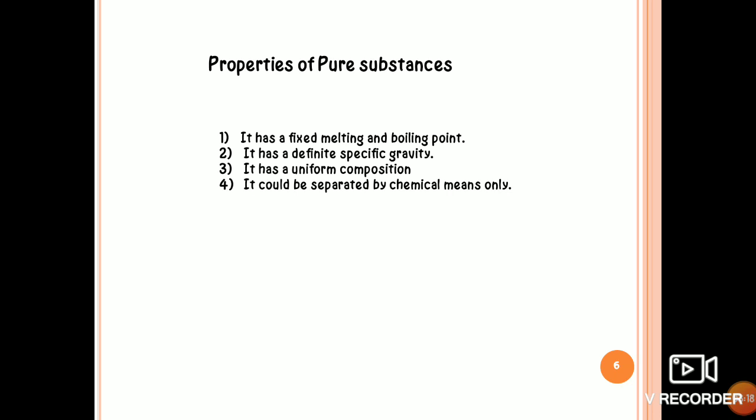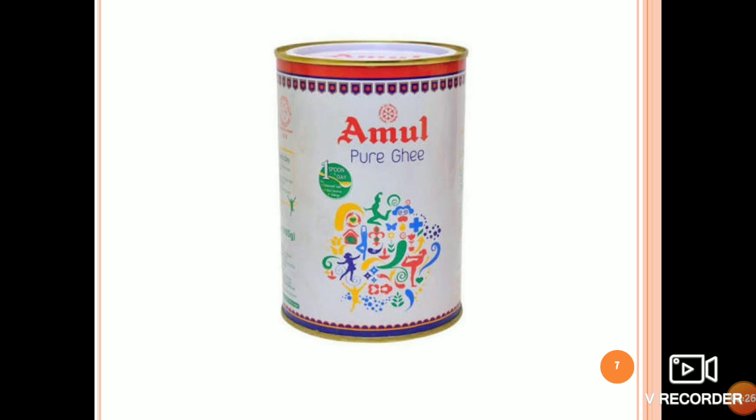If you see pure written on a container of a chemical, does this mean that it is made up of only one kind of particles? No, it is made up of more than one kind of particles. When we use it in daily terms, pure means that it does not contain any harmful substances. Chemically speaking, it is impure as it is made up of more than one kind of particles.